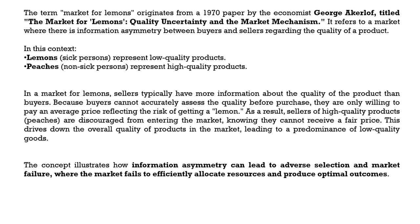In a market for lemons, sellers — the prospective patients — typically have more information about the quality of the product than the buyers — the insurance agents. Because buyers cannot accurately assess quality before purchase, they are only willing to pay an average price reflecting the risk of getting a lemon. As a result, sellers of high quality products — peaches — are discouraged from entering the market knowing they cannot receive a fair price. This drives down the overall quality of products in the market, leading to a predominance of low quality goods and illustrating how information asymmetry can lead to adverse selection and market failure.